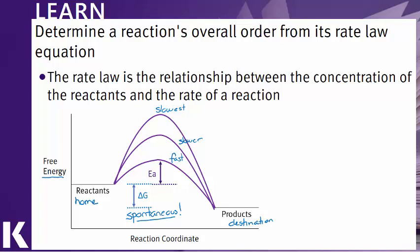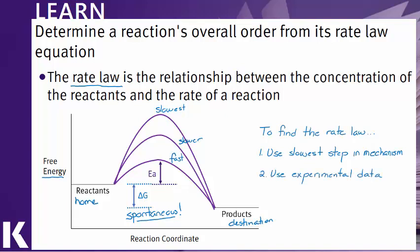And we're going to start with the rate law. The rate law will tell us how the concentration of reactants impacts the speed of a reaction. Whenever we are determining the rate law for a chemical reaction, we can do it via two ways. We can either use the slowest step in a reaction mechanism, or we can use experimental data, which is something we'll look at in a later video.